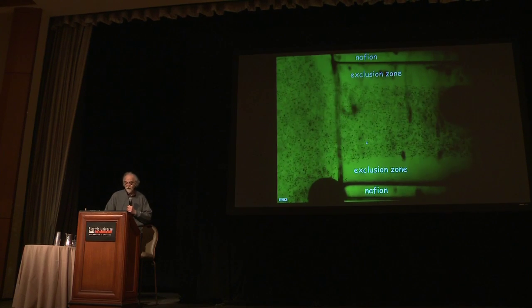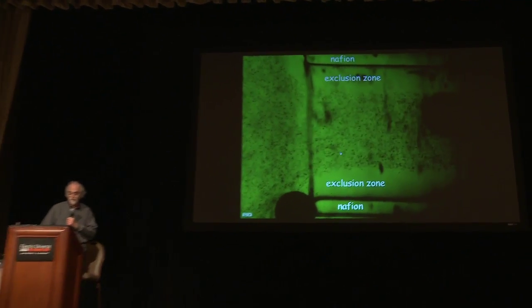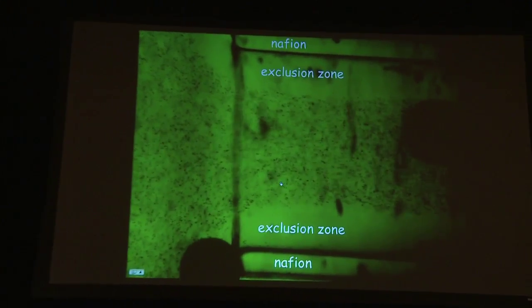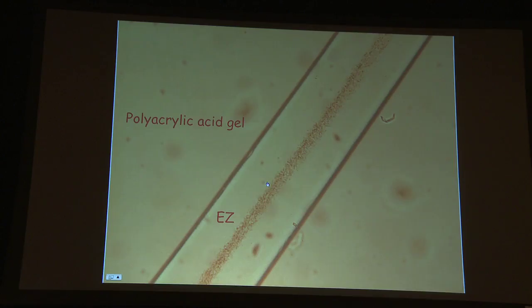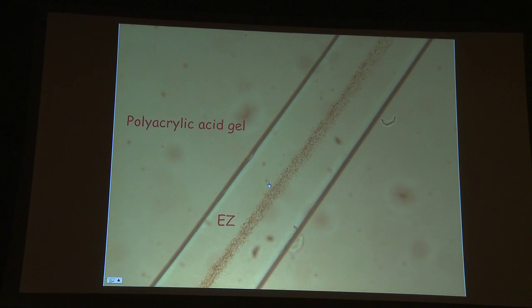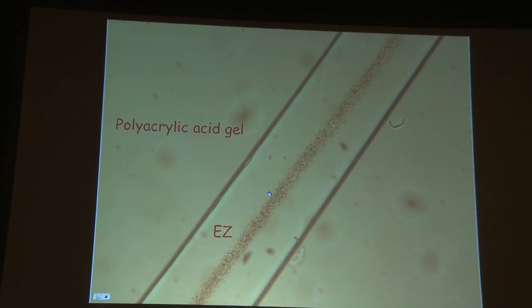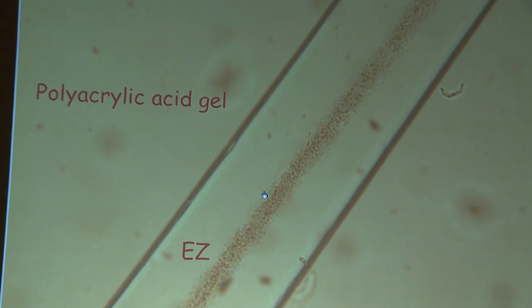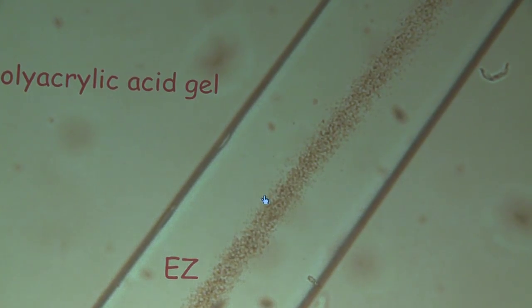Here's an example of the flow in the Nafion tube. You can see it occurring, and then the next slide shows it in the polyacrylic acid gel tube. So here's the opening, and here's the channel, and the water flows right through the channel spontaneously.